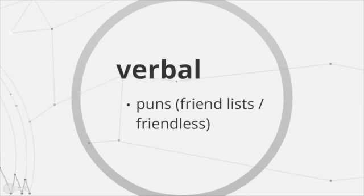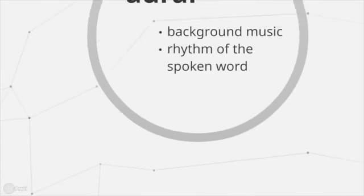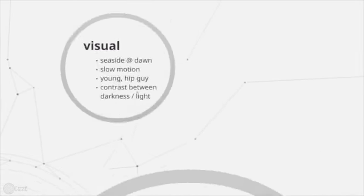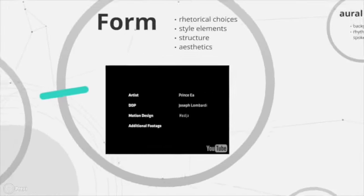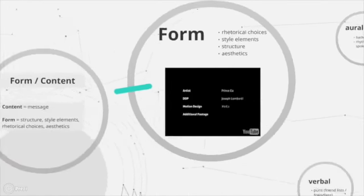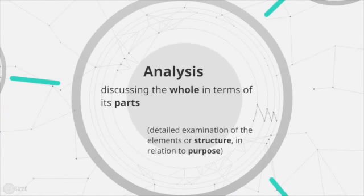So, here is a list. These three things are basically the style elements, the rhetorical choices that we're talking about. But we know, or the form, but we know we need to think about the form in relation to the content. We know to do analysis, we need to discuss the whole or the purpose in terms of its parts or the rhetorical analysis.